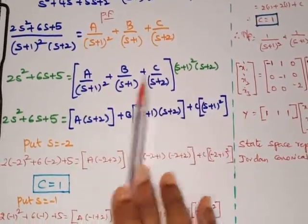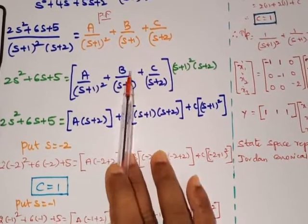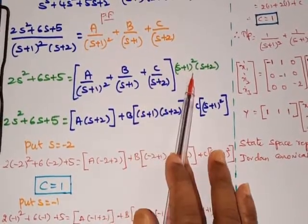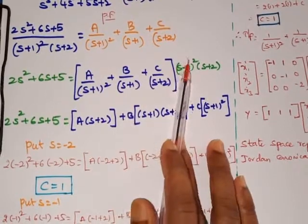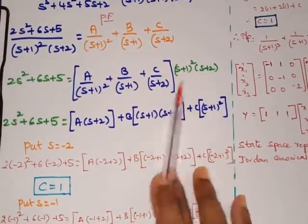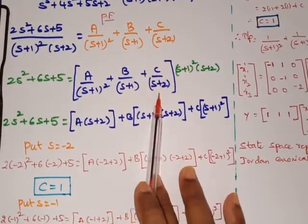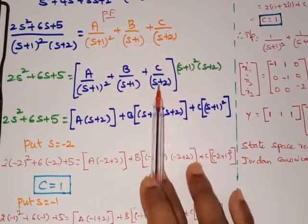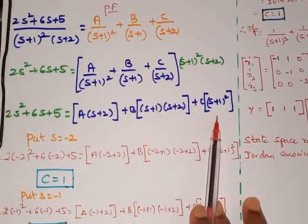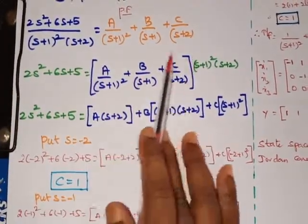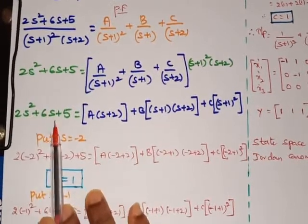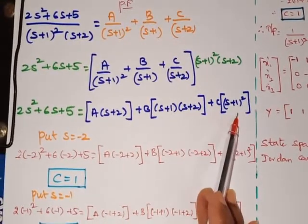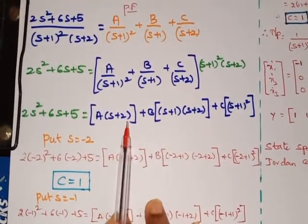For the B/(s+1) term, multiplying by (s+1)²(s+2) leaves one (s+1) factor, giving B(s+1)(s+2). For C/(s+2), the (s+2) cancels, leaving C(s+1)². So the full equation becomes: 2s² + 6s + 5 = A(s+2) + B(s+1)(s+2) + C(s+1)².